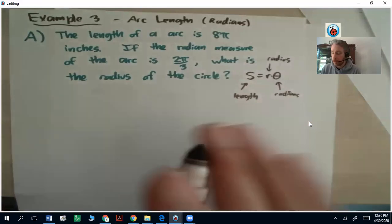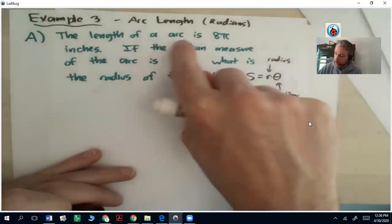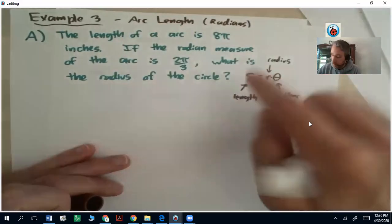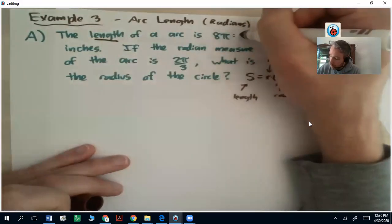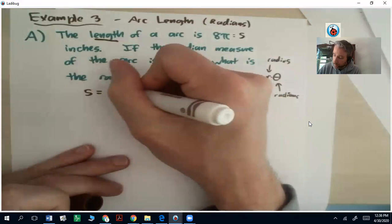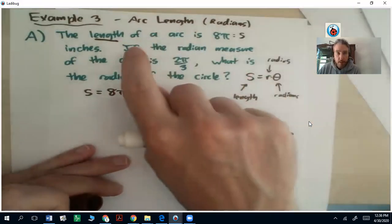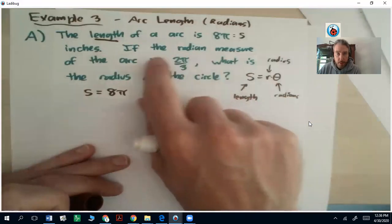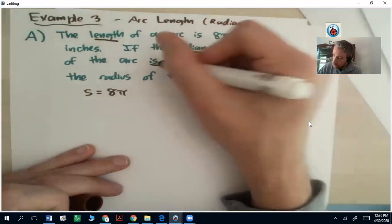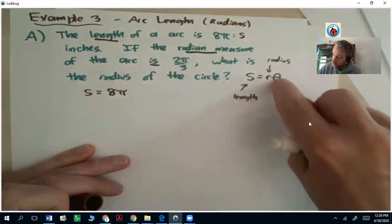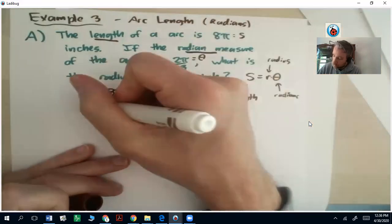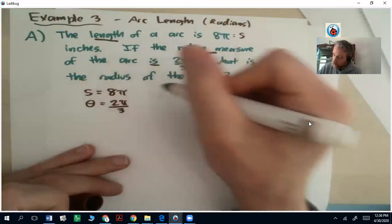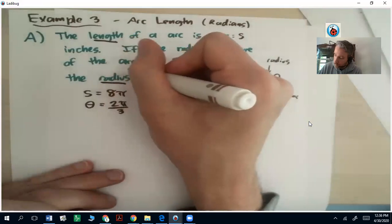So let's dig into the problem. The length of an arc is 8π inches. If the radian measure of the arc is 2π over 3, that's your theta. What is the radius? So we want to find r.